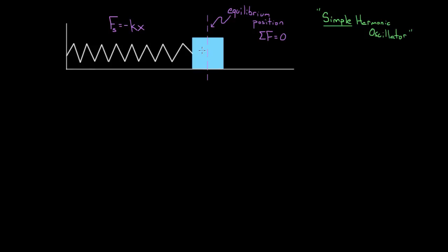To be completely honest, it has to be negatively proportional to the displacement. If you just had F equals Kx with no negative, then displacing it to the right would create a force to the right, which would displace it more, creating an even larger force — a runaway solution. So it's really forces with a negative proportionality to the displacement that restore back to equilibrium and give a simple harmonic oscillator.